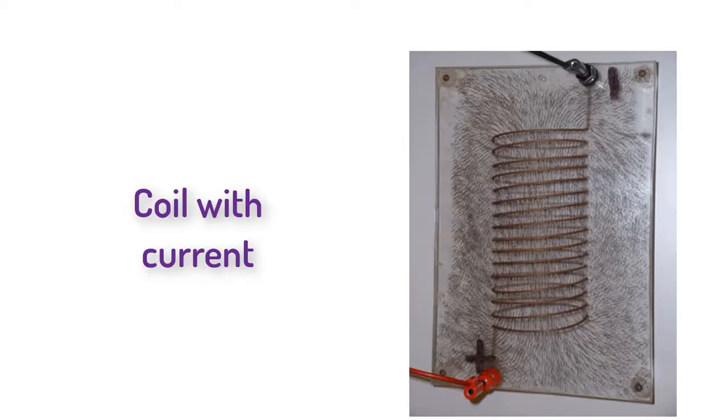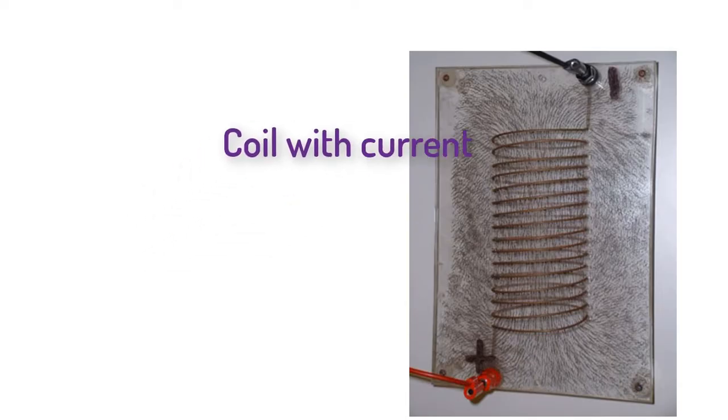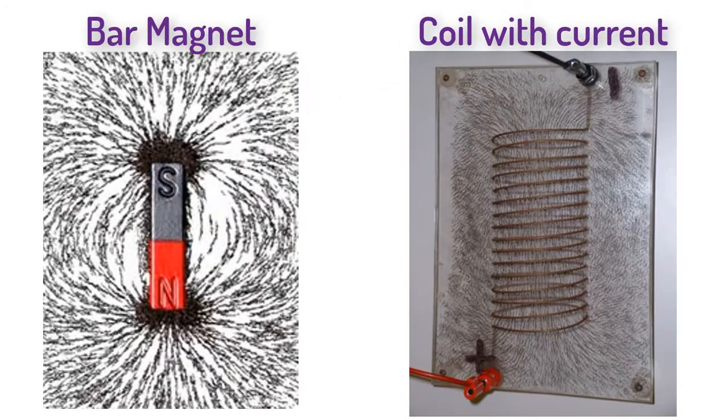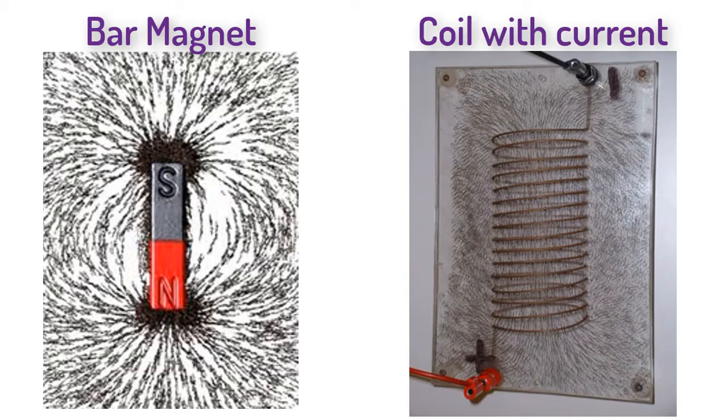Faraday also wrote that Ampere's spiral coil also demonstrated how the fields were additive from parallel wires, as if you look at a coil, it is composed of many parallel wires. Faraday also noted that a coil of wire with current in it acts identically to a bar magnet, albeit a weak one.